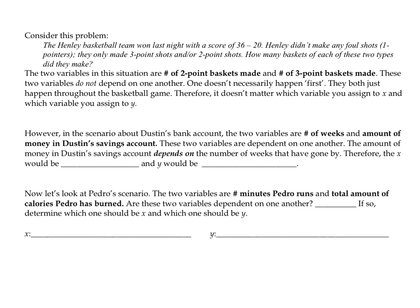Let's go back to Dustin's bank account. The variables were the number of weeks he was saving and the amount of money in his savings account. However much money is in his savings account will depend on how many weeks he's been saving. So the money in Dustin's savings account is the dependent variable, and the number of weeks is the independent variable. We put weeks on the x-axis and money in his account on the y-axis.